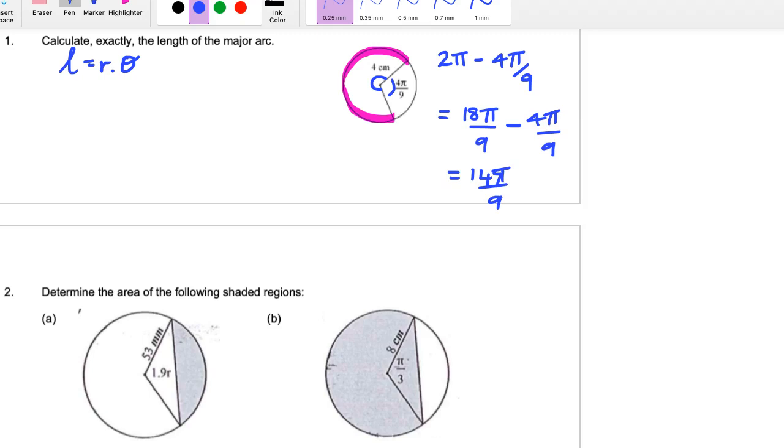So let's have a go. The length of this major arc is the radius 4 times 14π/9. So that gives me 59π/9, and that's in centimeters.